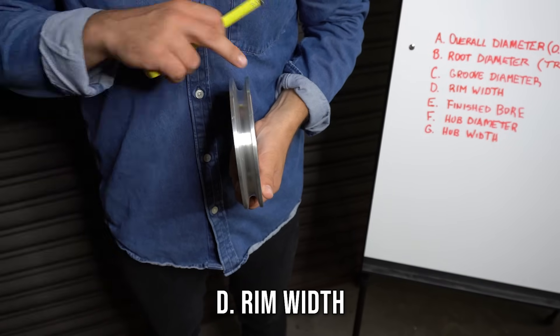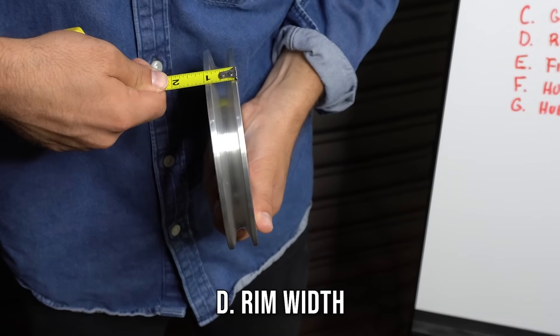Next we have your rim width from here to here. One inch.